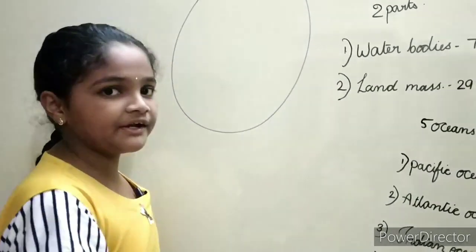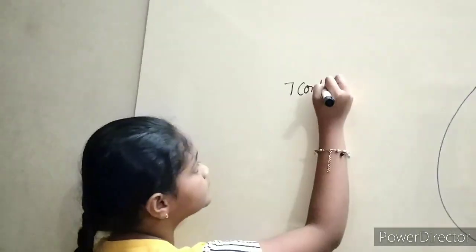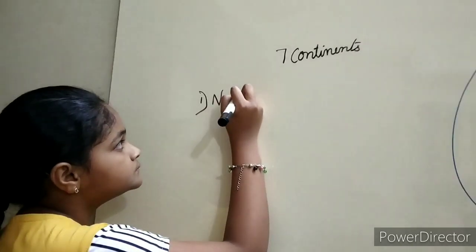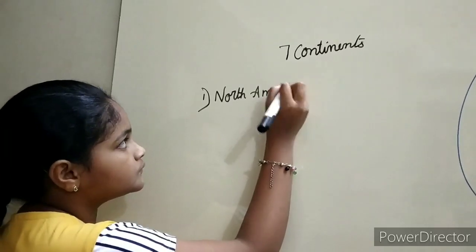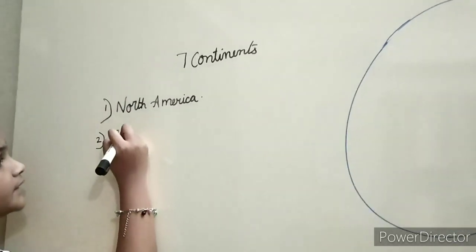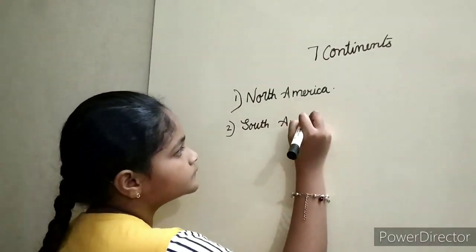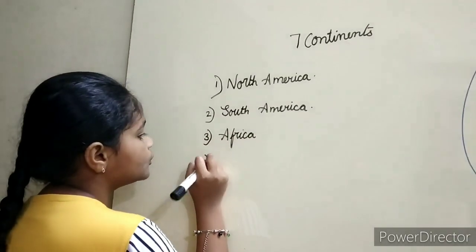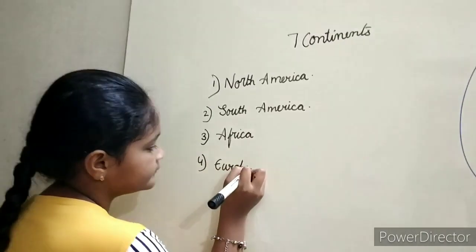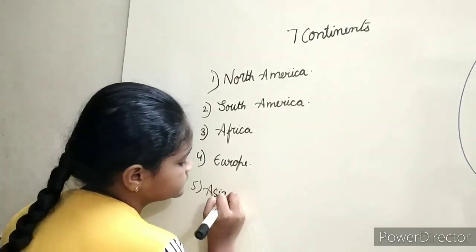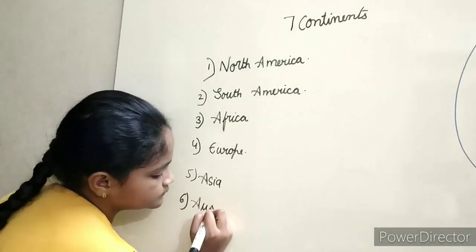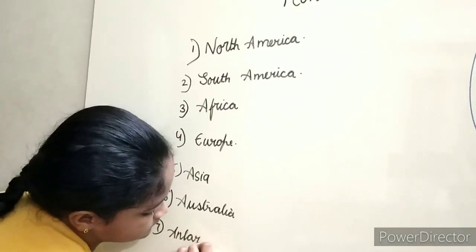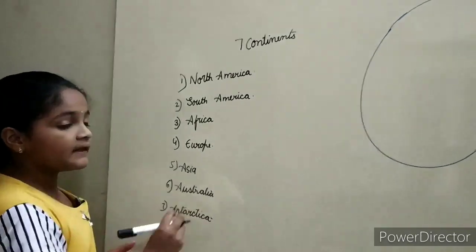And landmass is divided into seven continents. First, North America. Next, South America. Next, Africa. Fourth, Europe. Fifth, Asia. Sixth, Australia. And seventh, Antarctica. These are the 7 continents.